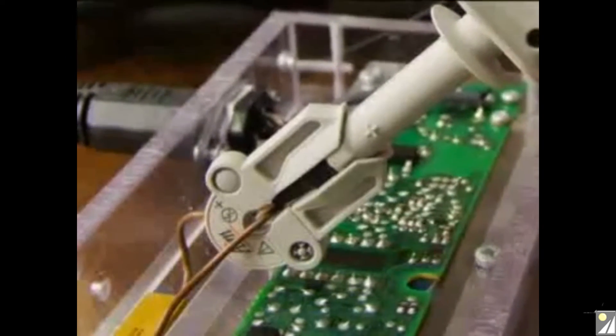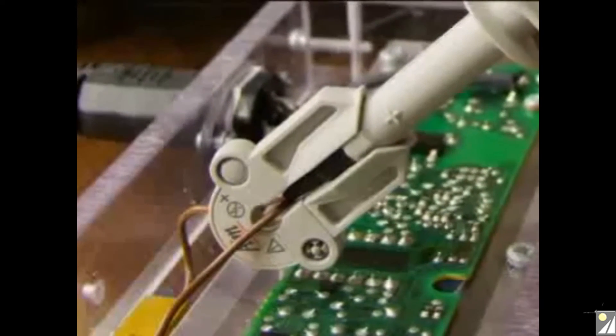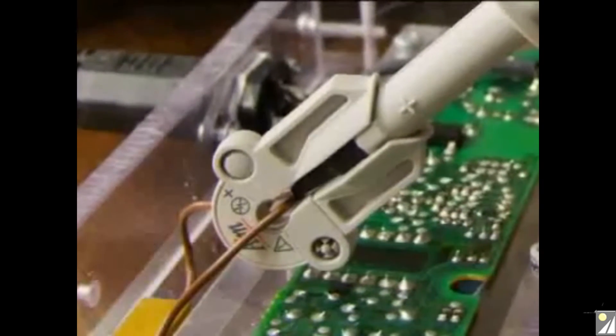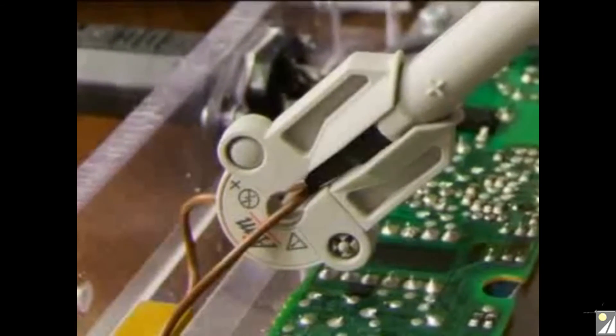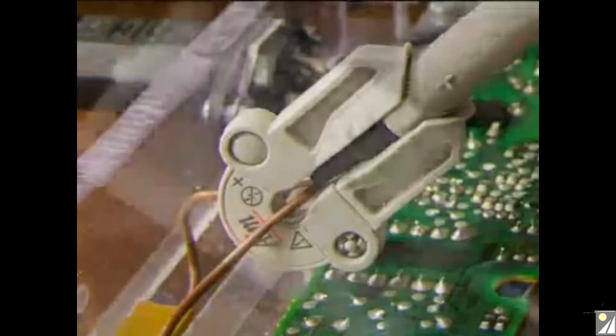A clip-on toroid assembly is supplied that converts it into a conventional probe when required. In this mode, the iProber has the same bandwidth and dynamic range but with greater rejection of adjacent fields.